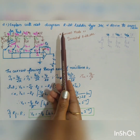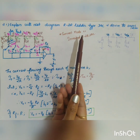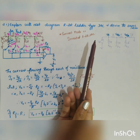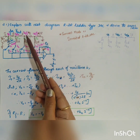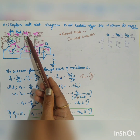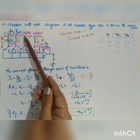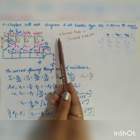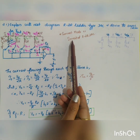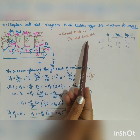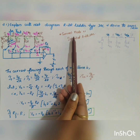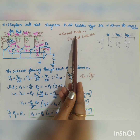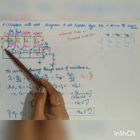The question is: explain with a neat diagram the R-2R ladder type DAC and derive the expression for the output voltage. The diagram given in your textbook is called the inverted R-2R DAC, or it is a current mode DAC.